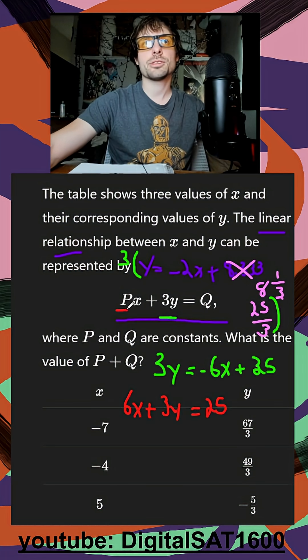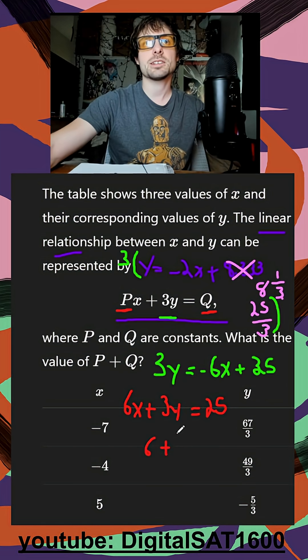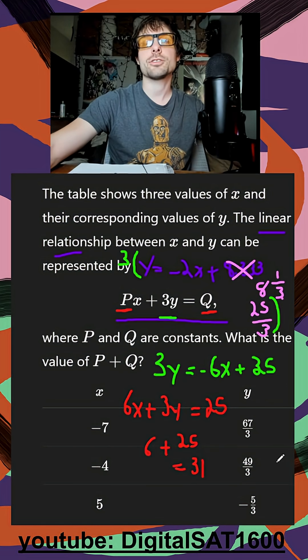And finally, I get 6x plus 3y is equal to 25. I see what my placeholders are. P is in front of x, and Q is the number on the right side. So it's going to be 6 plus 25, and my final answer is 31.